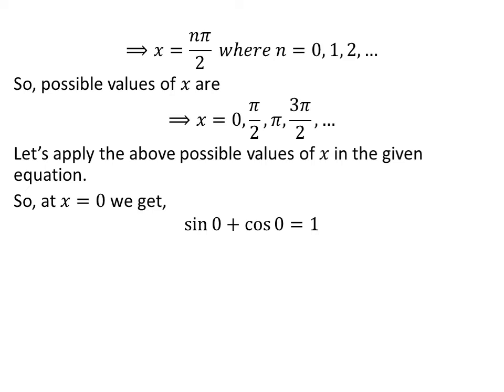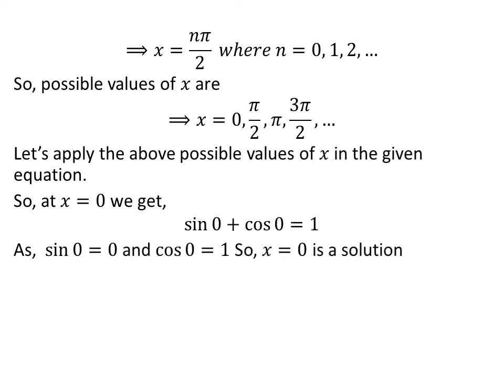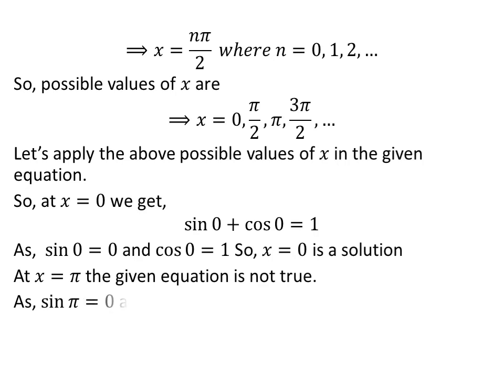Let us apply the possible values of x in our given equation sin of x plus cosine of x is equal to 1. Applying x equal to 0: sin of 0 plus cosine of 0 equals 0 plus 1, which equals 1. So x equal to 0 is a solution. Now, applying x equal to pi: sin of pi is 0 and cosine of pi is minus 1, so the equation is not satisfied. Therefore, x equal to pi is not a solution.